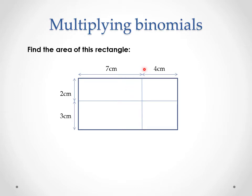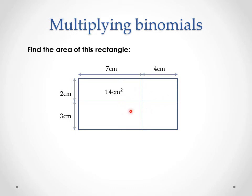Going back to our example from a couple of lessons ago, where we looked at multiplying binomials or expanding out binomials as being finding the area. So in here we have this rectangle where we've got the length over here, 7 plus 4, and the width being 2 plus 3 down here. So if we wanted to find the area of this rectangle, we can find the area of the individual little rectangles inside and just sum them up.